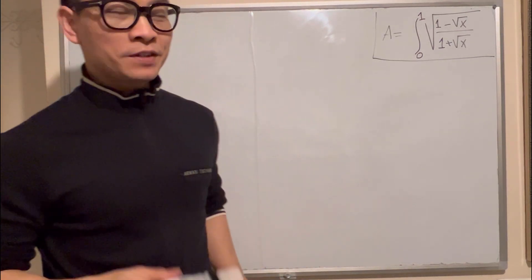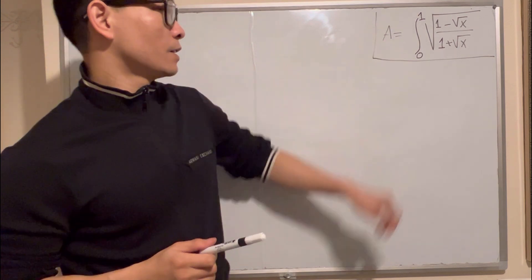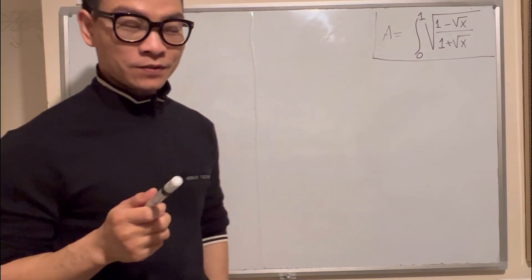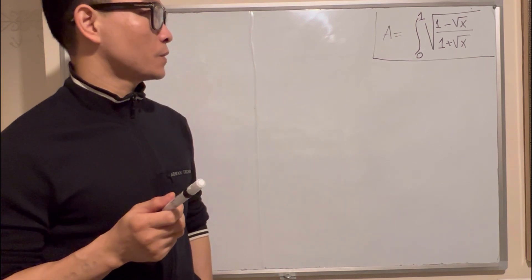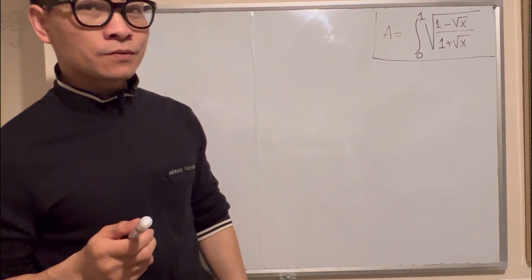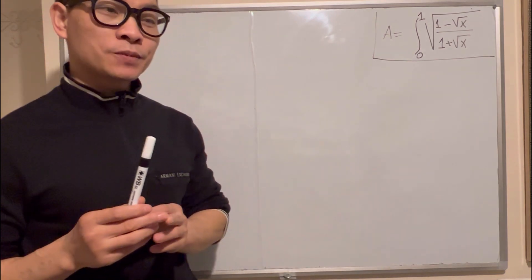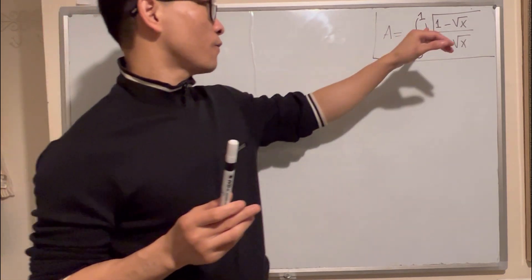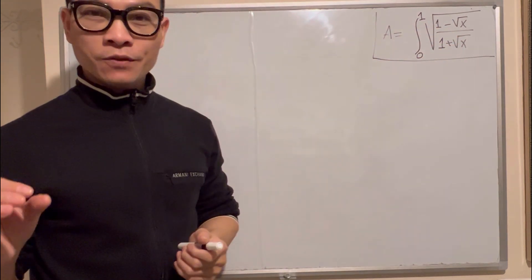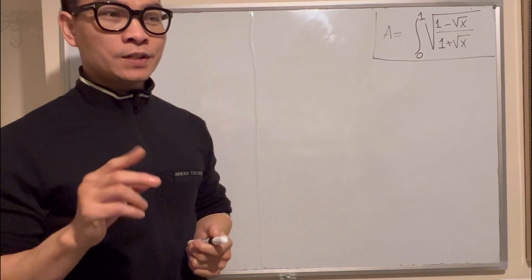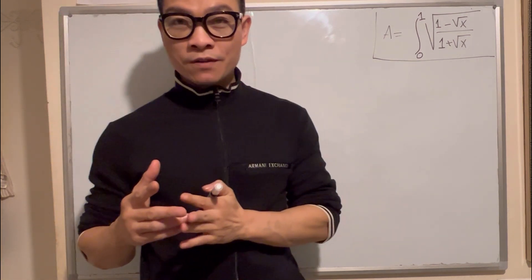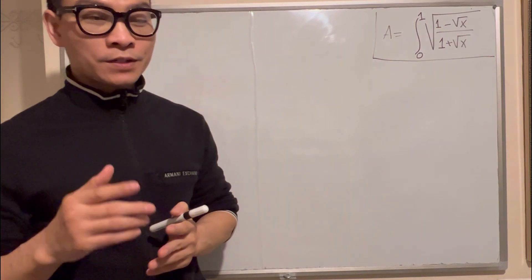Good morning. Today we have integration analysis and how to sort it out. First, I want to show a solution for reading off the square root. When you read off a square root and put it in, you can use a substitution formula for that.